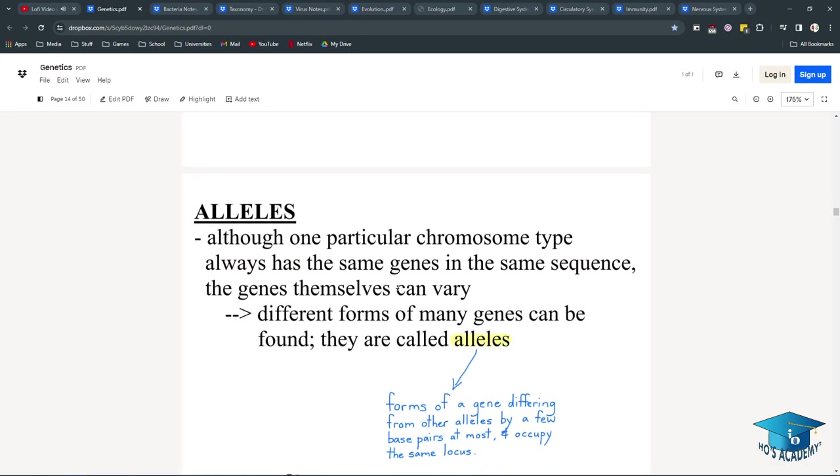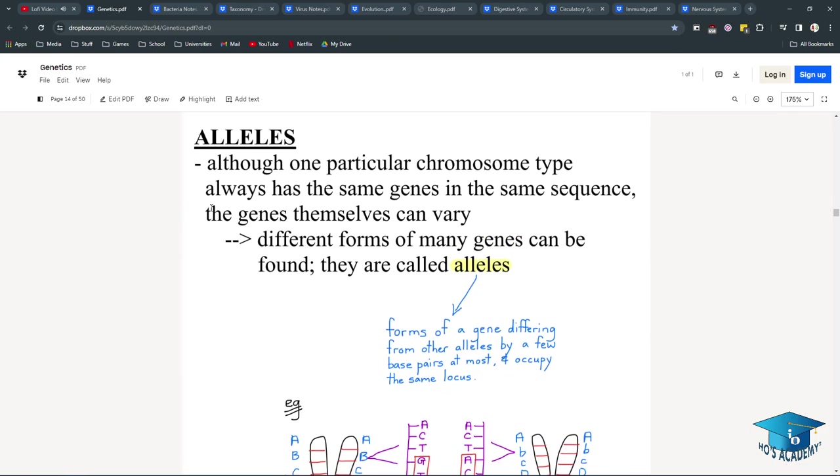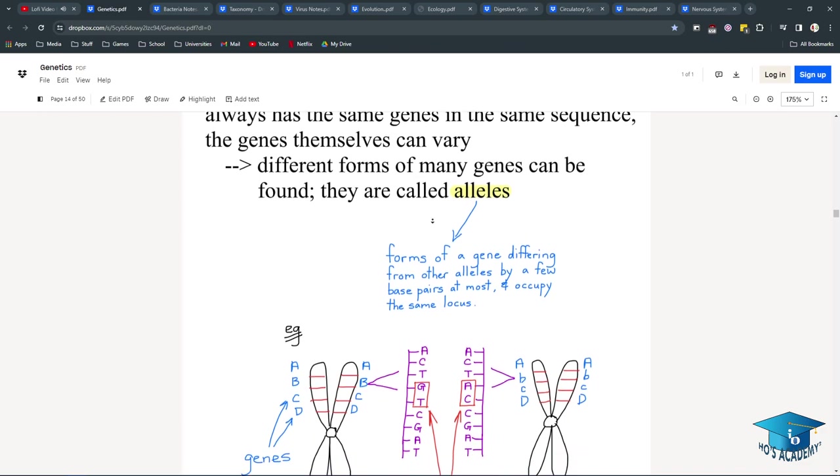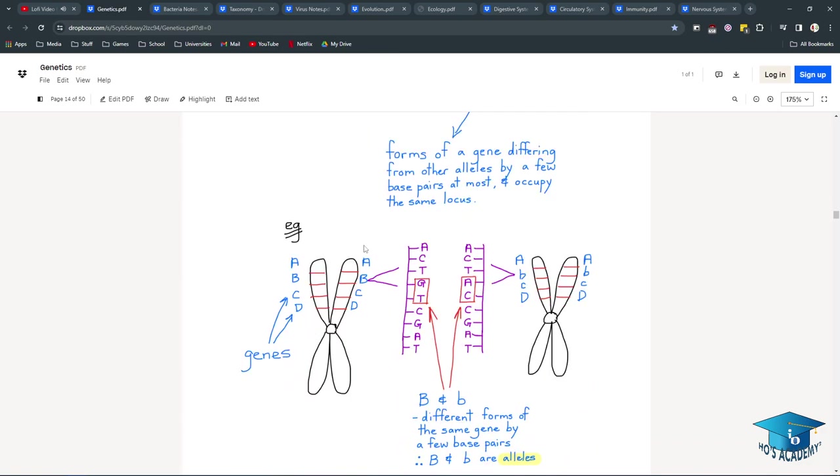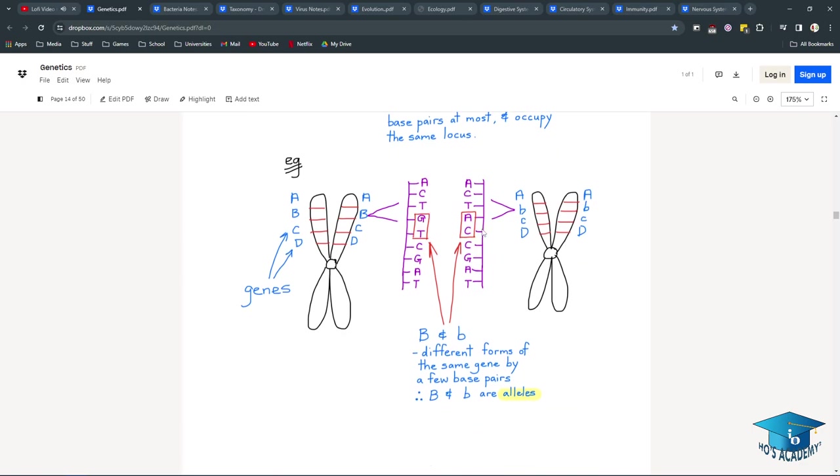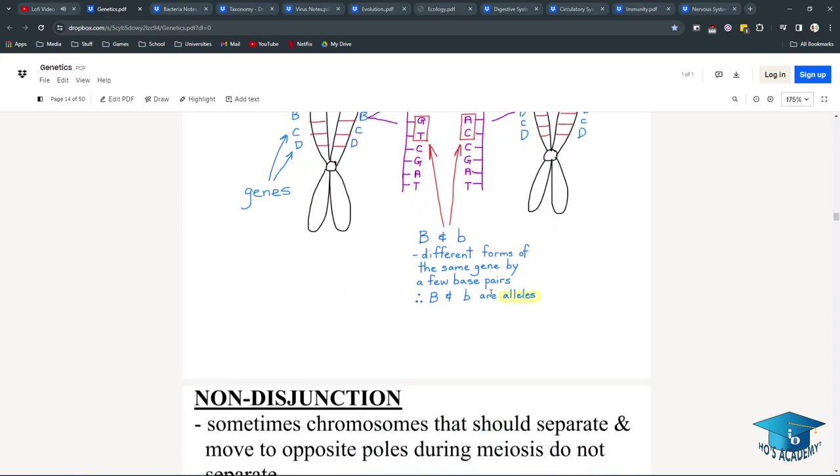Alleles. Although one particular chromosome type always has the same genes in a sequence, the genes themselves can vary. So, even though they might always code for hair, the thing that codes for hair might be different in itself. You might have a different hair color. So, that's what an allele is, where these things are the same, except for a slight difference. So, B and b are alleles of each other, because on this loci, this little gene sequence, they match up with each other, but this difference is just a slight change.